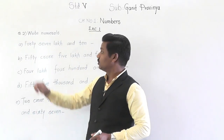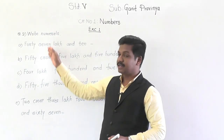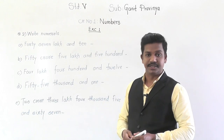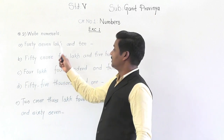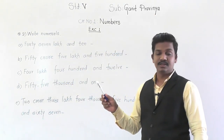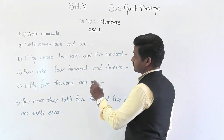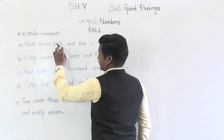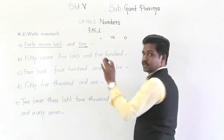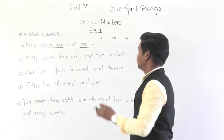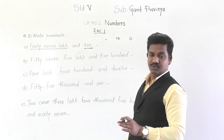Let's move to question number two: write numerals. Number names are given and we have to write the numeral for each. The first example is 47 lakh and 10. Here 47 lakh is the first group and 10 is another group. Only two groups are given, but that doesn't mean you write only lakh and ones — the middle group must also be written, otherwise you will get the wrong answer.